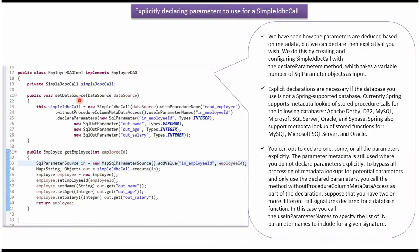Here you can see the setDataSource method. Spring container creates a data source object and passes it to this method. That data source object will be set to the SimpleJdbcCall object. The SimpleJdbcCall object is going to use the read_employee stored procedure, and the input parameter is in_employee_id.